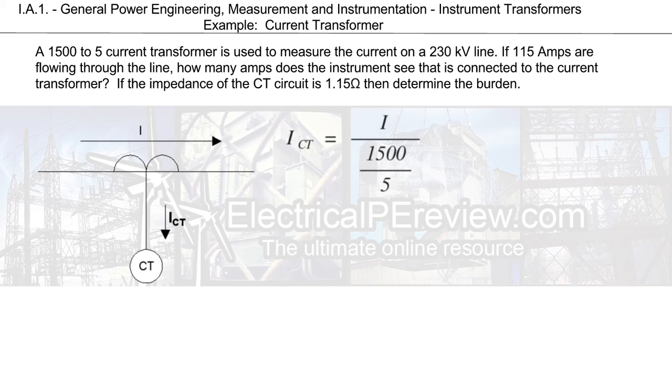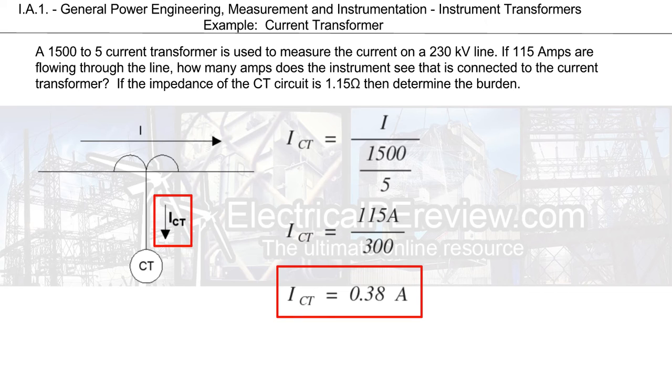So to start things off, we're going to find our current going to our CT by dividing the line current by our ratio of 1500 to 5. Our line current here in this example was given in the problem statement as 115 amps. Solving for our secondary current or our current transformer current, we're going to find 0.38 amps. And that is the current being derived through the windings of the CT off the primary line.